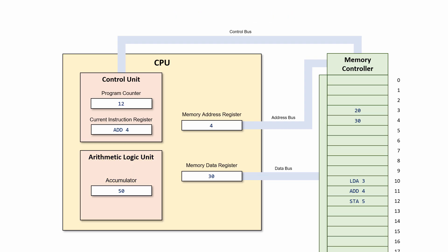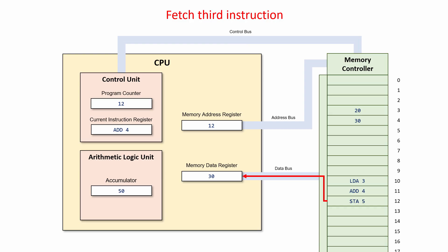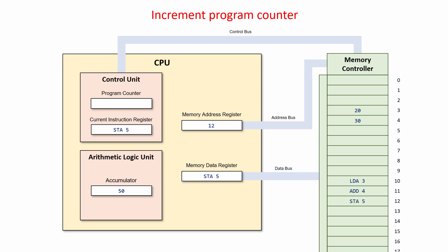The program counter was previously incremented, so it's already pointing to the next instruction to be fetched. The contents of the program counter are copied to the memory address register, and from here they're copied to the memory controller via the address bus, and a read instruction is issued. The instruction at memory location 12 is put onto the data bus and copied into the memory data register, replacing what was already there. From here it's copied to the current instruction register. Immediately after the fetch, the program counter is incremented, so if there's another instruction to be had, it's already pointing to it.